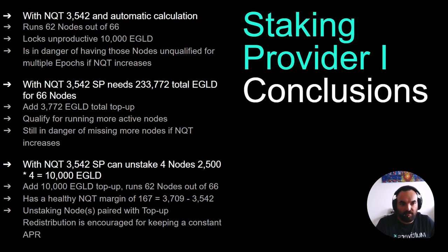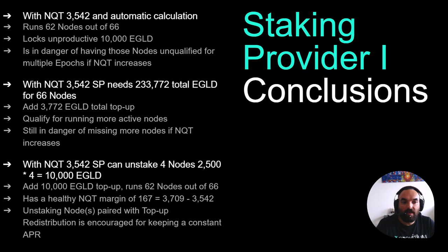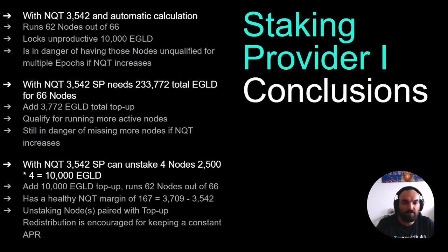The second strategy, which may be a bit less obvious, would be to unstake four nodes. They will then have 10,000 EGLD to use as top-up for the remaining 62 nodes. This brings staking provider 1's top-up per node to 3,709, giving them about 167 EGLD of NQT margin above the network's node qualifying threshold — which we consider a healthy position to be in.